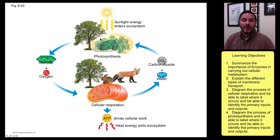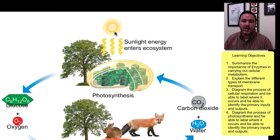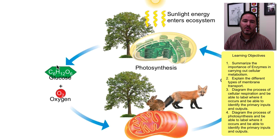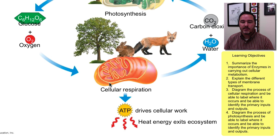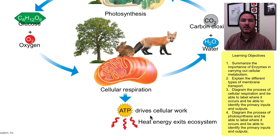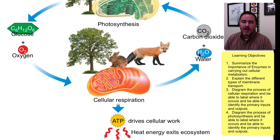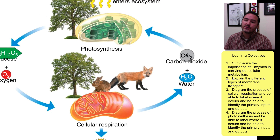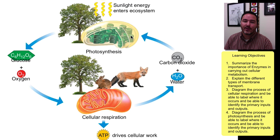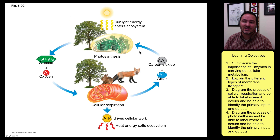Now we'll talk about photosynthesis and cellular respiration. Notice how these two processes are linked. Light coming from the sun enters Earth, and plants convert that light energy into chemical energy — typically in the form of glucose. Glucose and oxygen are the ingredients needed for cellular respiration, which produces ATP, heat, water, and carbon dioxide. It turns out that water and carbon dioxide are also ingredients for photosynthesis, so you get this cycle of both nutrients and energy.